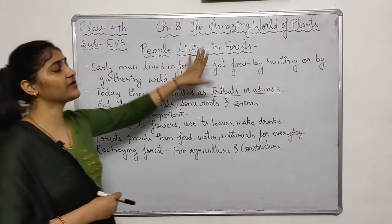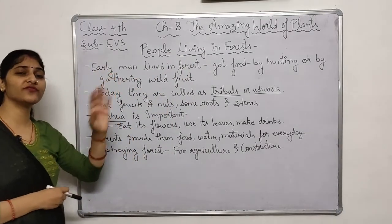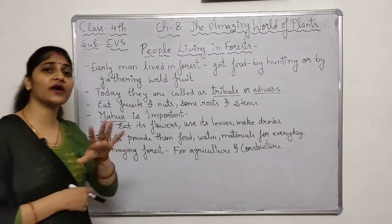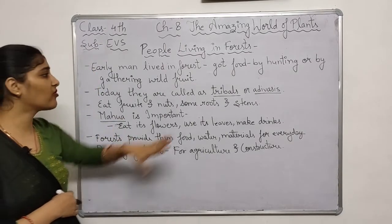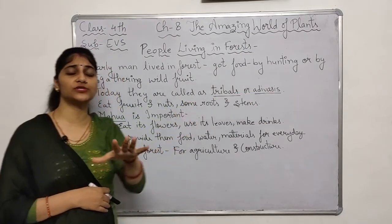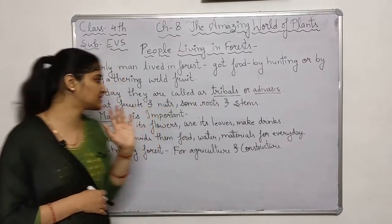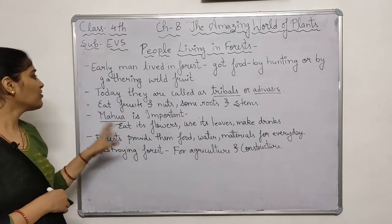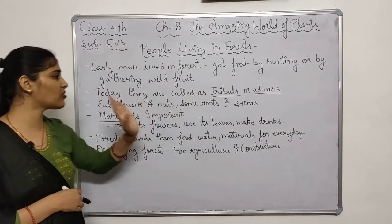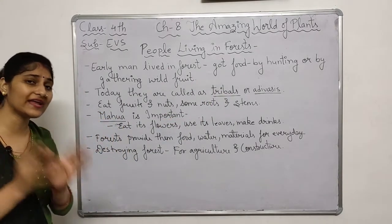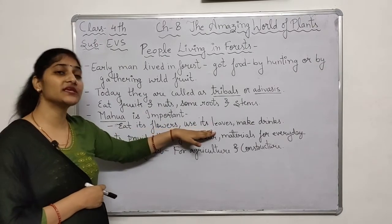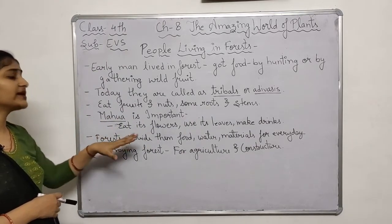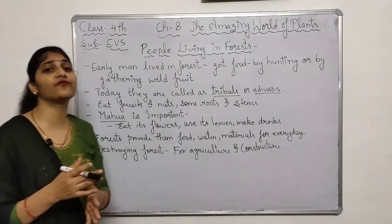The next topic is people living in forests. Early man also used to live in forests — they got food by hunting or gathering wild fruits. Today also, there are some people who live in forests; we call them tribals or adivasis. These people eat fruits, nuts, and some roots and stems of plants. Mahua is an important plant for tribal people. They eat its flowers, use its leaves for various purposes, and also make drinks out of mahua. Forests provide them with food, water, and various other materials useful in everyday life.